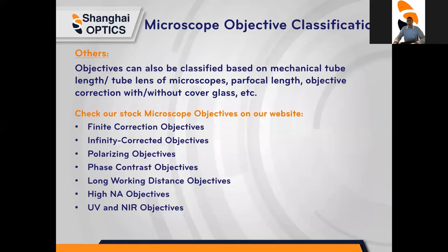Other objective classifications can be based on mechanical tubing, par focal length, objective correction with or without cover glass, and more.